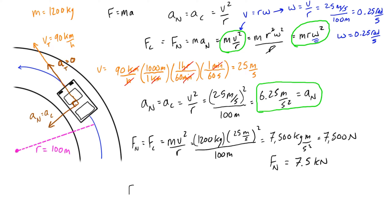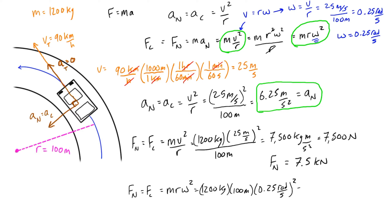Let's verify using the other method: F_n = mrω². Filling in the values: 1200 kg × 100 m × (0.25 rad/s)². Punching that into the calculator gives 7500, and the units work out to kilogram·meters per second squared — exactly the same result. F_n = 7.5 kilonewtons.